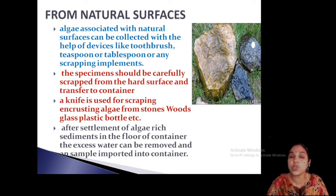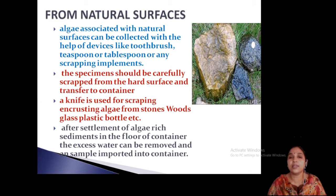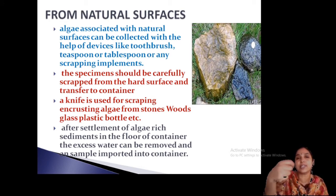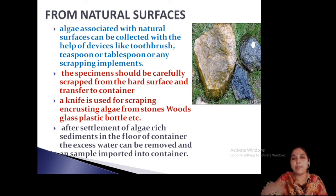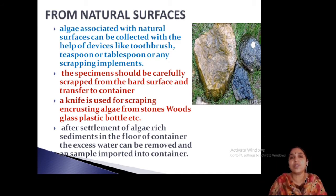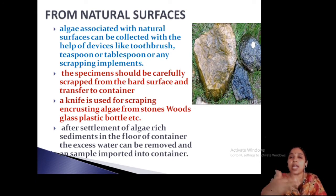From natural surfaces, algae are growing on pebbles, stones, and marbles. You can collect it by using devices like a spatula, teaspoon, or toothbrush to scrape it from the surfaces. Collect it and carefully transfer it to a container — you can use a plastic container or a petri plate. Scrape it from the surface and transfer into the container. Usually a knife is also used for scraping.